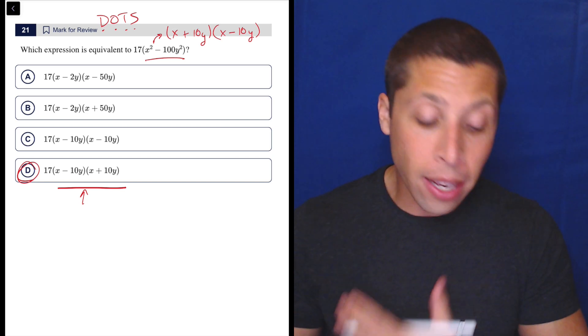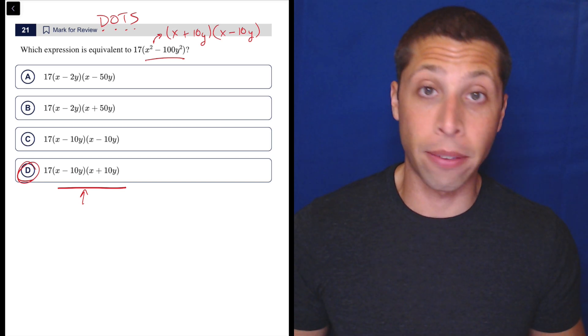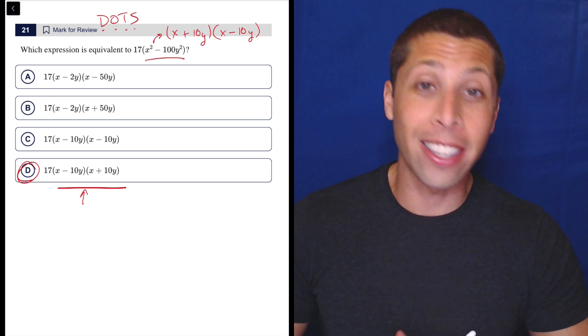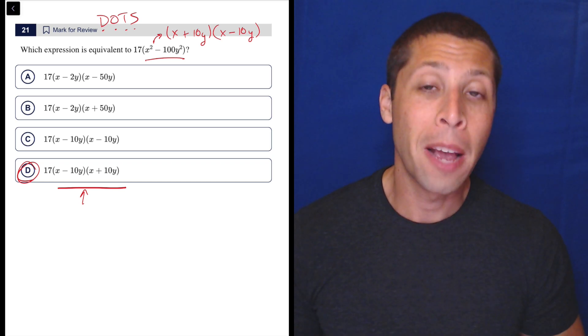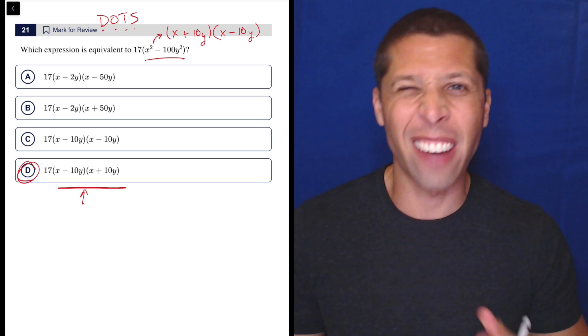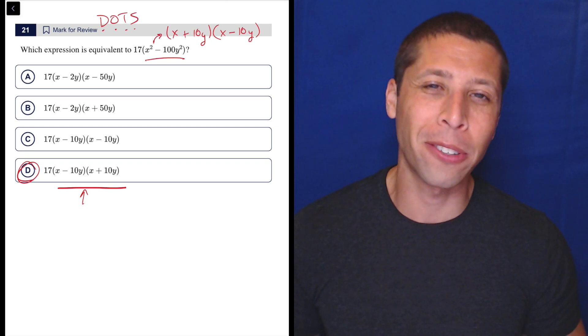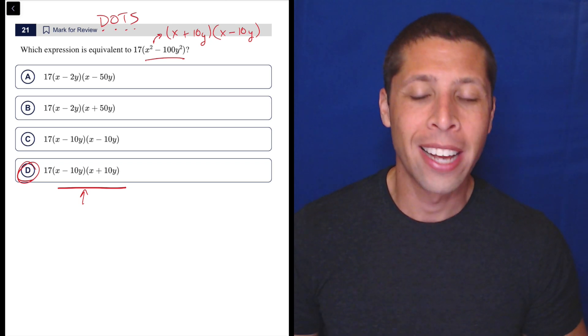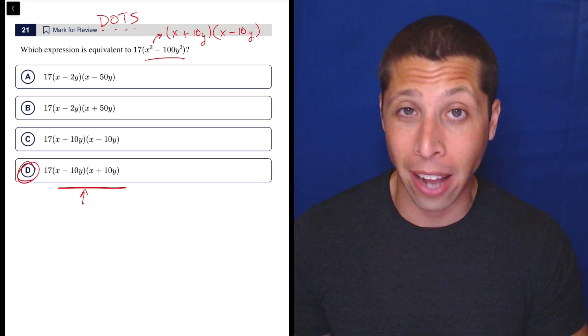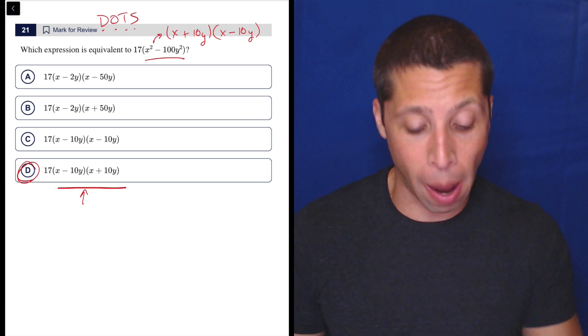So that is just one way to get it, is just know this kind of factoring. It is something the SAT likes because they know everyone learns it, but then forgets it because it's not really like the most common type of factoring. There are very special cases where it works, so they're counting on you to have forgotten it. Now, if you did, we have some other options.